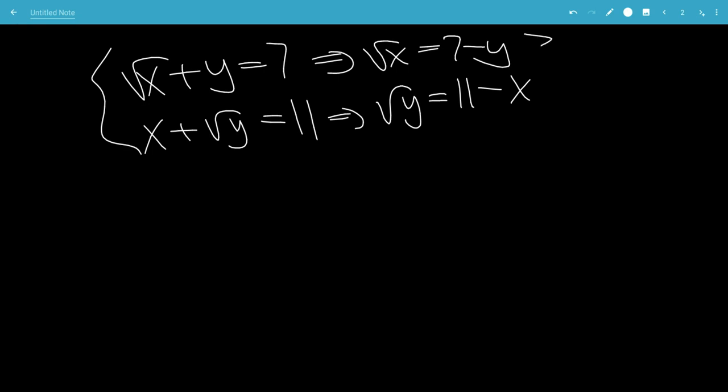And because of the square root, this has to be bigger than or equal to 0 in both cases. This means that negative y has to be bigger than or equal to negative 7, and also that negative x has to be bigger than or equal to negative 11.